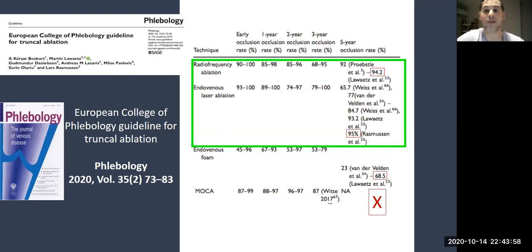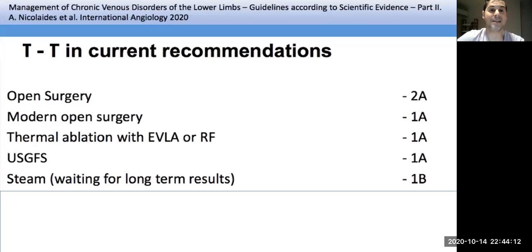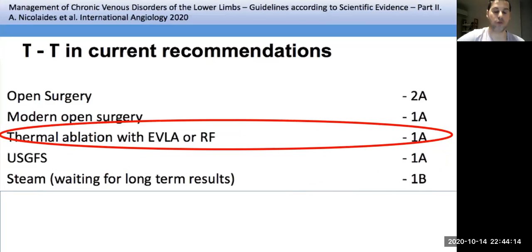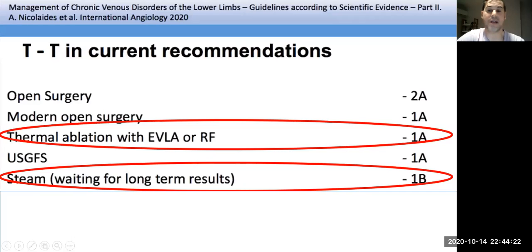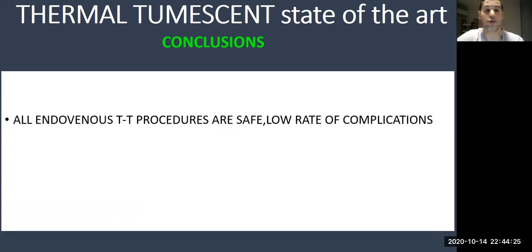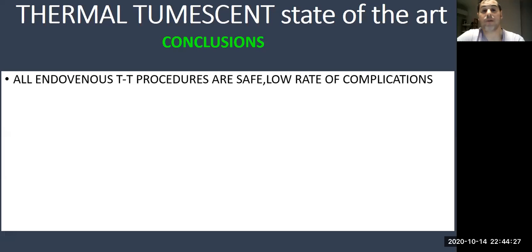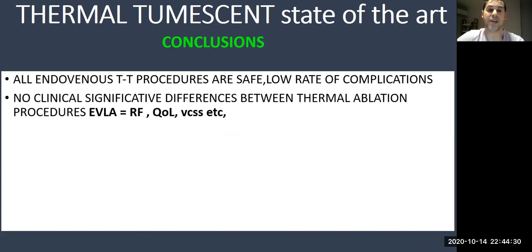At five years, radiofrequency presents a 94.2% occlusion rate and endovenous laser presents 95%, according to Rasmussen. Per international phlebology guidelines, thermal tumescent ablation is rated 1A and ultrasound-guided foam sclerotherapy is rated 1B. In conclusion, all endovenous thermal procedures are safe with a low rate of complications, and there are no clinically significant differences between thermal ablation procedures — they are essentially equivalent.